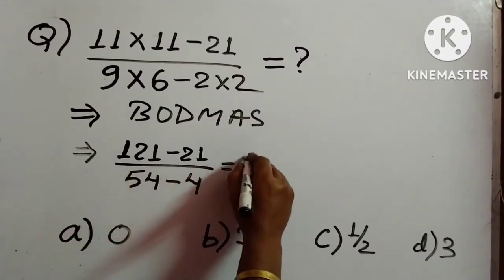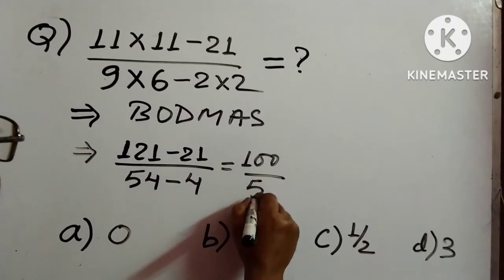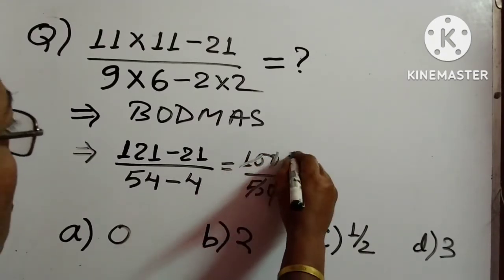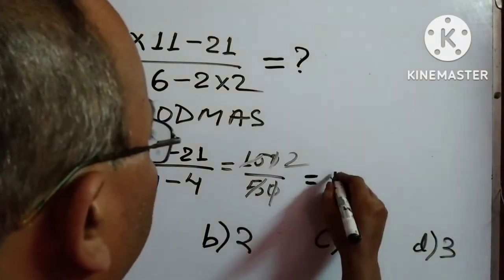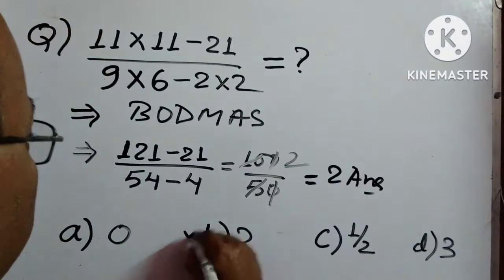Now you subtract, this will become 100 and 54 minus 4 is 50. Now you cancel this one. So 2. So here answer will be 2. So option B.